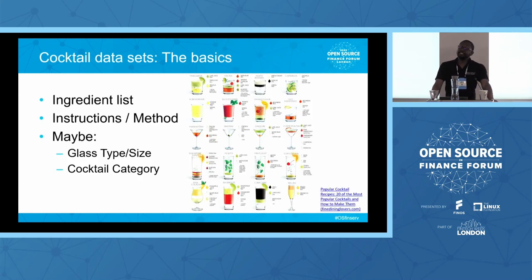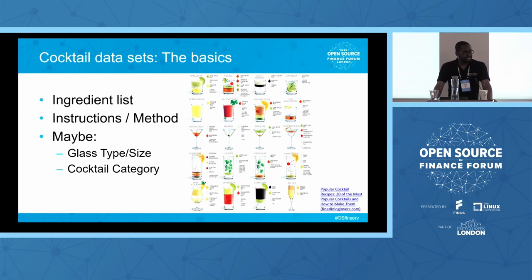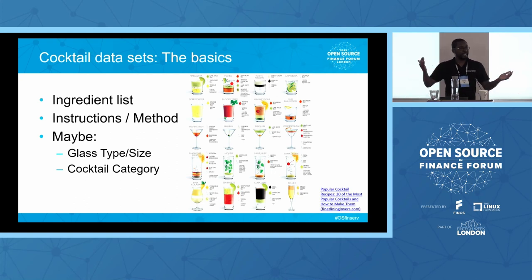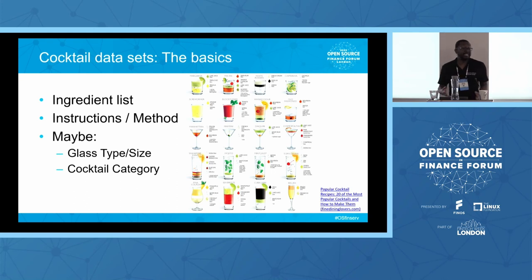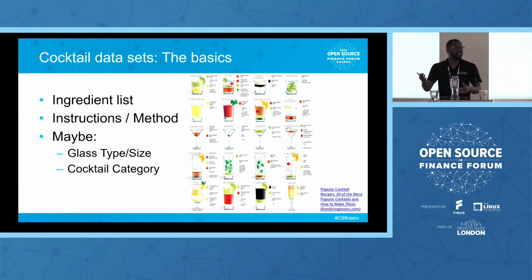For anybody who has drunk a cocktail, seen a cocktail list, or wanted to prepare a cocktail, there are some basic things that are important to know about them. The first thing is the ingredient list — it tells you the ingredients and how much of each you need. Most recipes give you the method, the glass type and size, and potentially a category like shots, classics, or coolers.